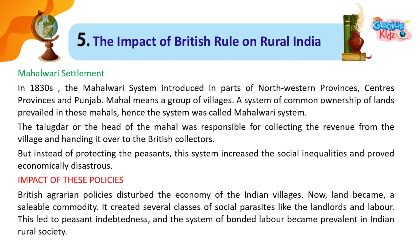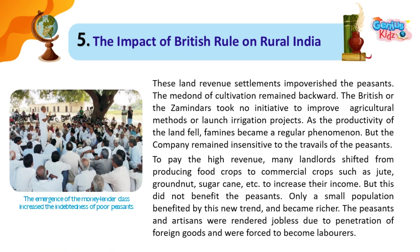Impact of these policies: British agrarian policies disturbed the economy of Indian villages. Land became a saleable commodity. It created several classes of social parasites like landlords, leading to peasant indebtedness, and the system of bonded labour became prevalent. These land revenue settlements impoverished the peasants. The standard of cultivation remained backward, as neither the British nor the zamindars took any initiative to improve agricultural methods or launch irrigation projects.